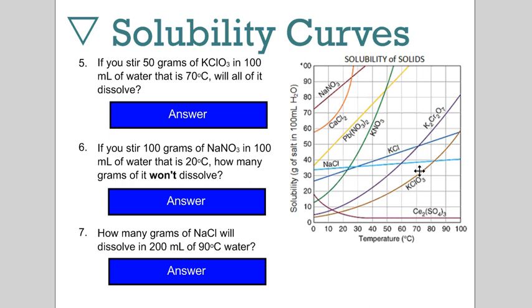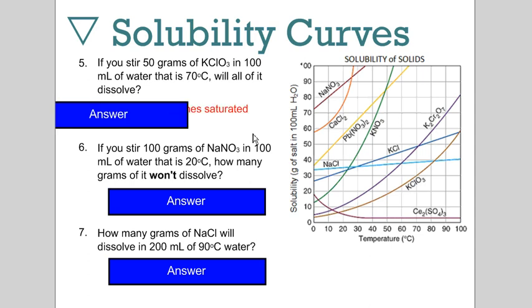If you simply drop 50 grams in 70 Celsius water, you're going to dissolve 30 grams and 20 grams will fall to the base of the container. So no, it saturates at 30 grams. If you stir 100 grams of sodium nitrate in 100 mils of water at 20 Celsius, how many grams will not dissolve?